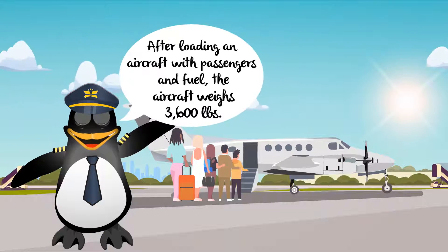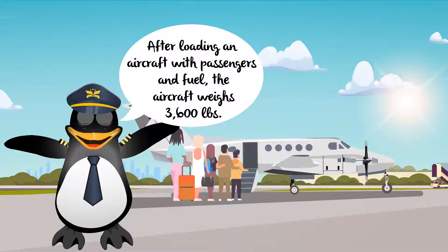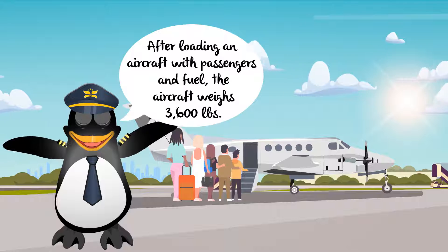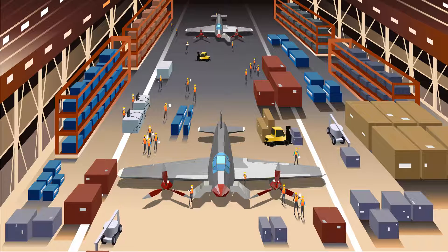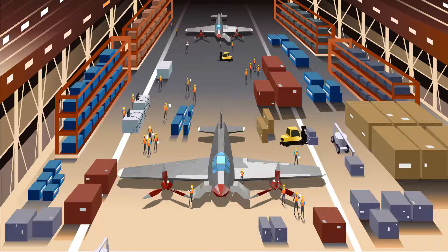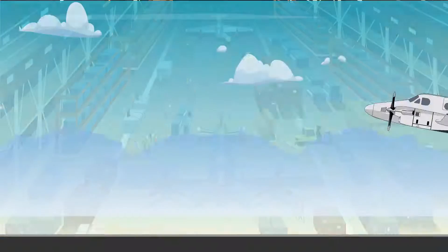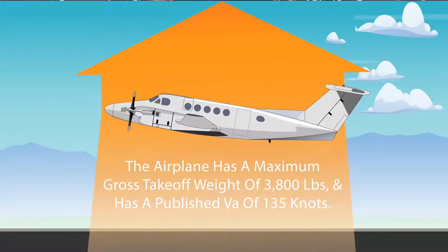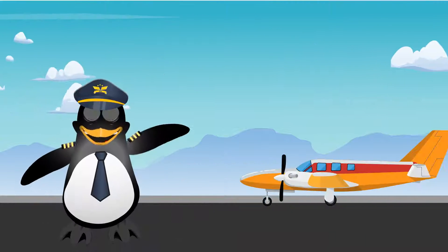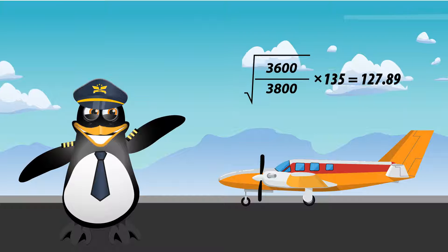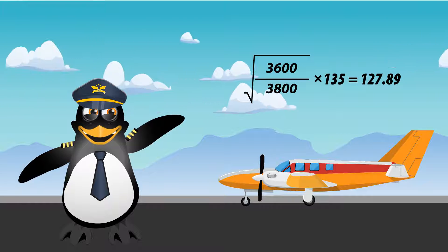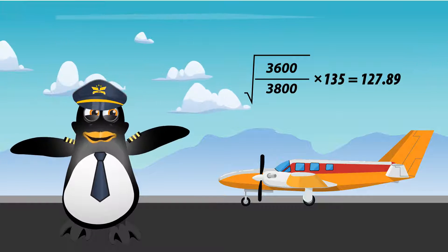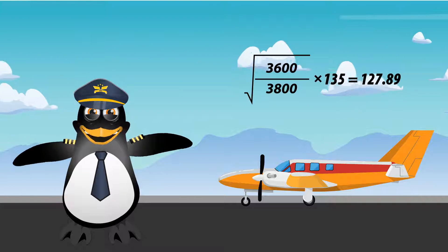Here's an example. After loading an aircraft with passengers and fuel, the aircraft weighs 3,600 pounds. Based on the aircraft manufacturer, the airplane has a maximum gross takeoff weight of 3,800 pounds and has a published VA of 135 knots. The square root of 3,600 over 3,800 is 0.947. Multiplied by the published VA of 135, the VA for this flight will be 127.89 knots.